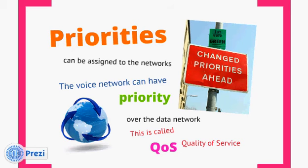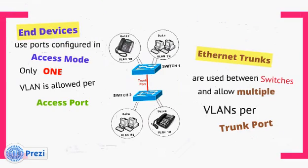At certain points in the network where data and voice traffic flows, we can give priority to the voice traffic. End devices use ports configured in access mode. End devices are things like IP phones, laptops, PBX servers, print servers, web servers, etc. Only one VLAN is allowed per access port.